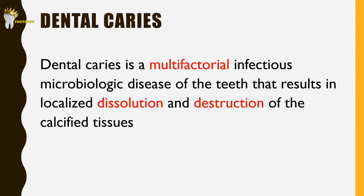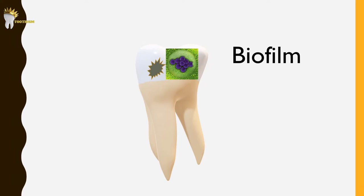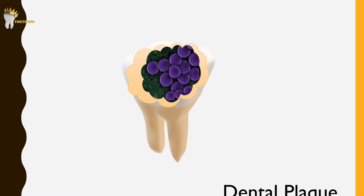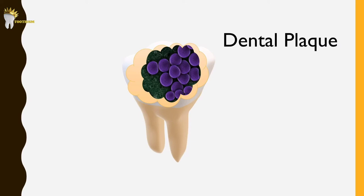So let's see how a caries lesion develops. For caries to occur, there has to be a mass of bacteria capable of producing acids that demineralize the tooth structure. This microbial community growing on a tooth surface is called biofilm. On a clean tooth surface, first the saliva forms a coating on the tooth called pellicle. Then within 12 hours, single-cell bacteria like cocci start attaching to the pellicle, and within 24 hours these cells multiply and form microcolonies — this forms the dental plaque.